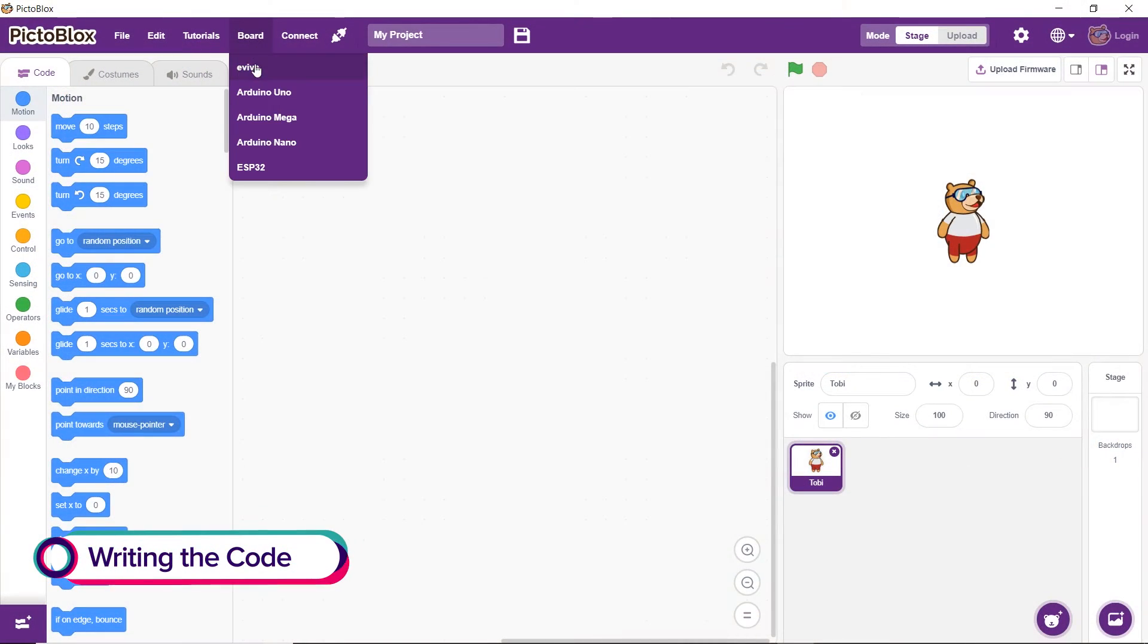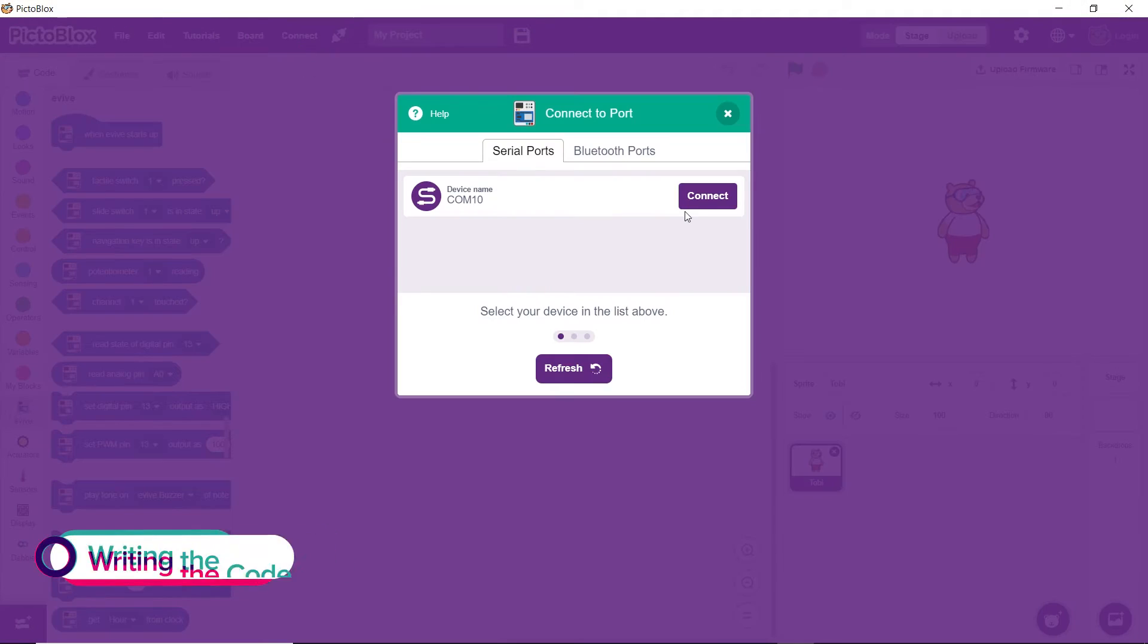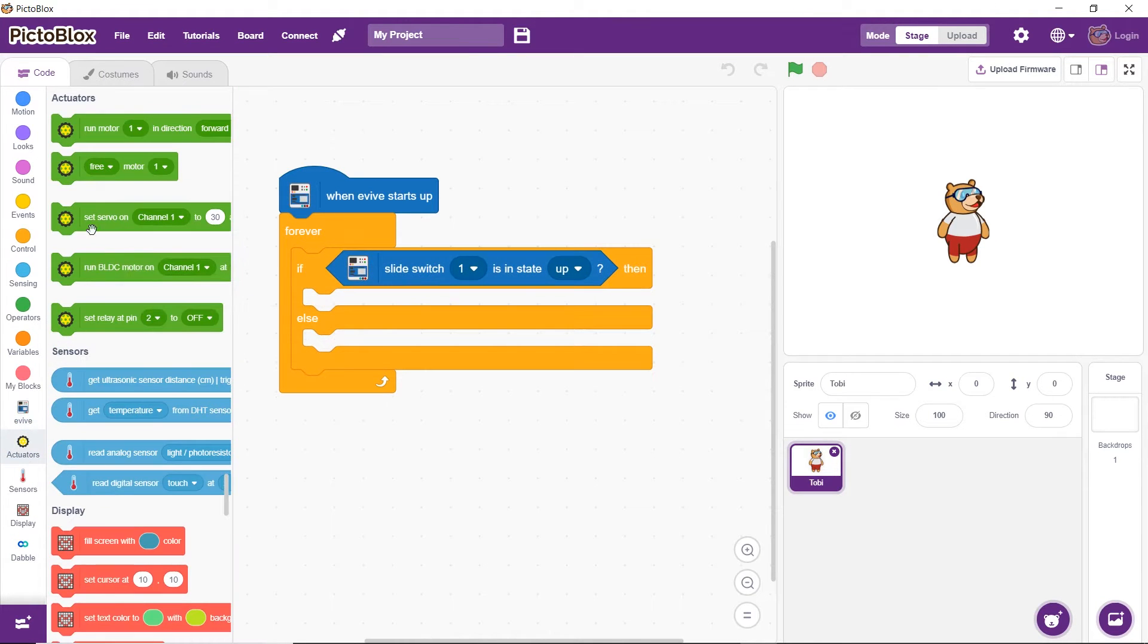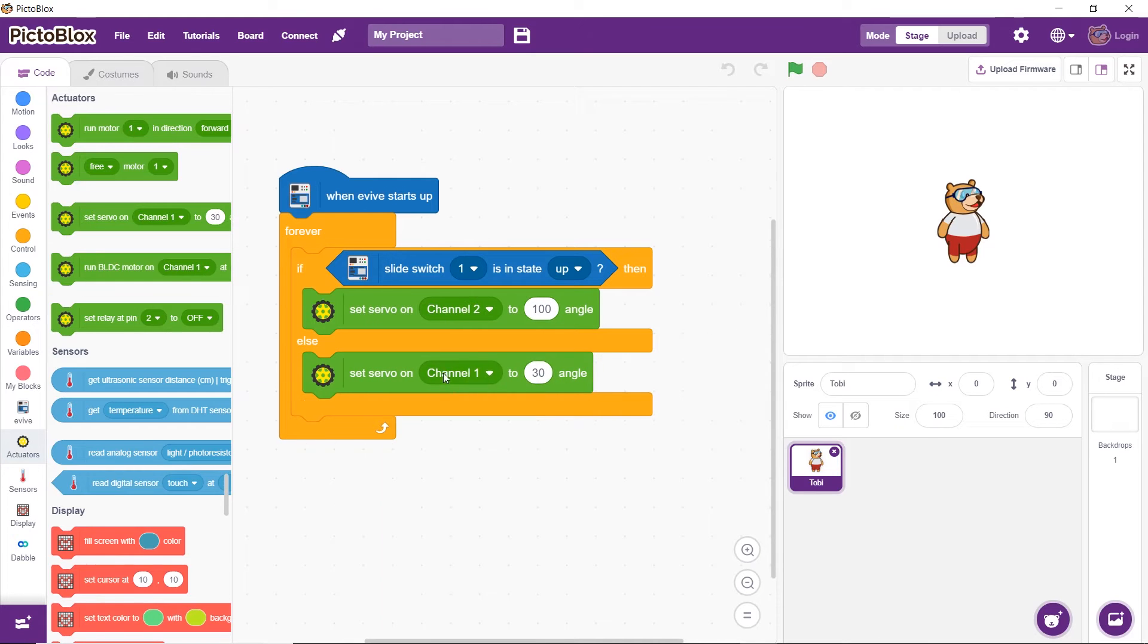Then write the code in PictoBlox and upload it to evive. The program will run when evive starts up. The door should open when we slide the slide switch upwards. Otherwise, it should remain closed.